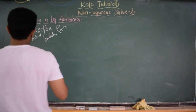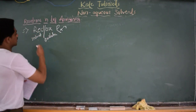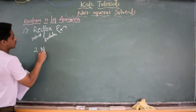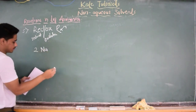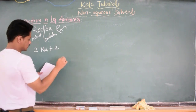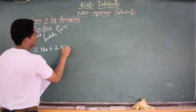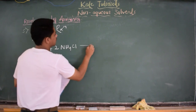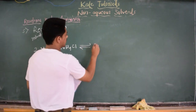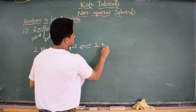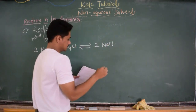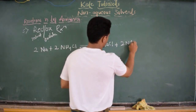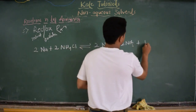There is one example for you. The redox reaction taking place in liquid ammonia: when 2 molecules of sodium react with 2 molecules of ammonium chloride in liquid ammonia, we get 2 molecules of NaCl plus 2 molecules of NH3 plus H2.